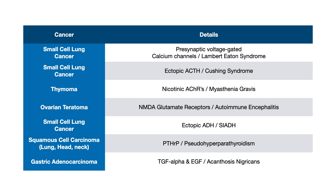There are two seemingly different topics that get merged together on USMLE and COMLEX. Just like combining an ovarian neoplasm with hyperthyroid and thyroid histology, you have to be able to do that with various different malignancies. This is really, really high yield.